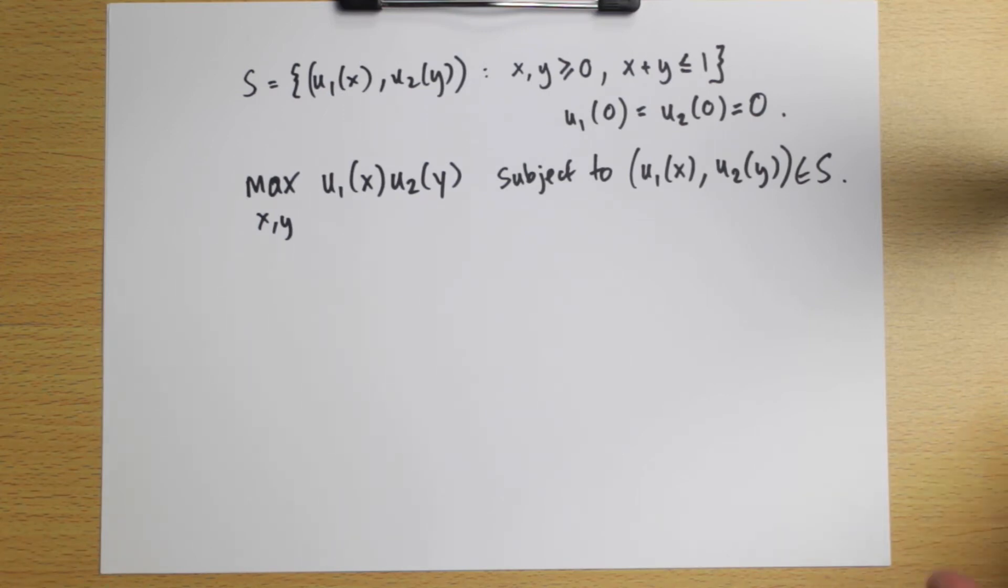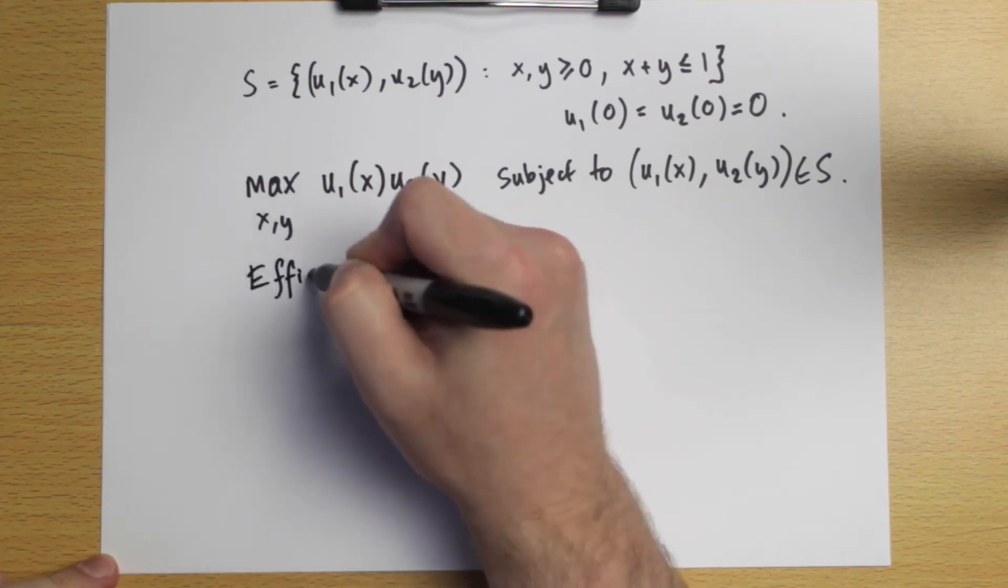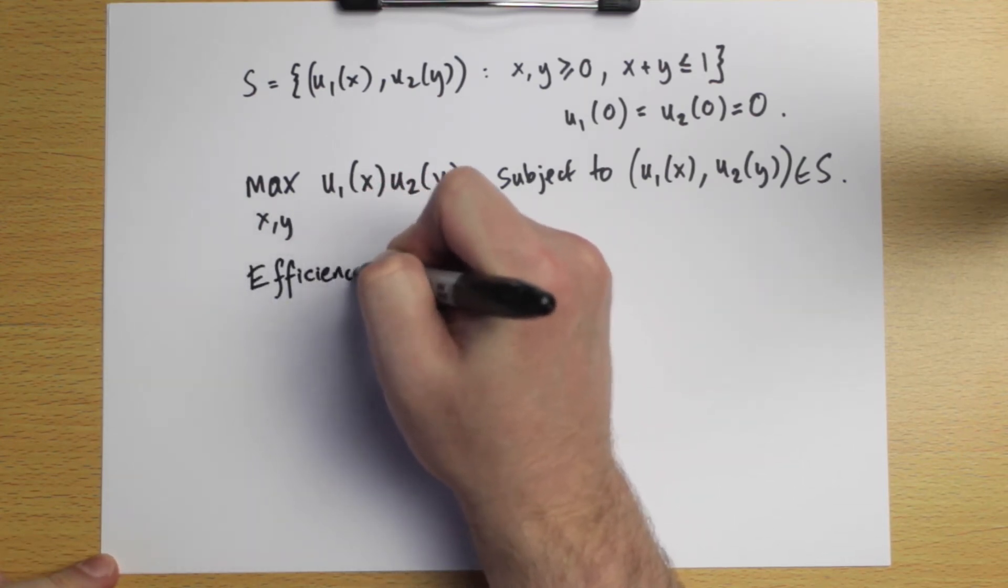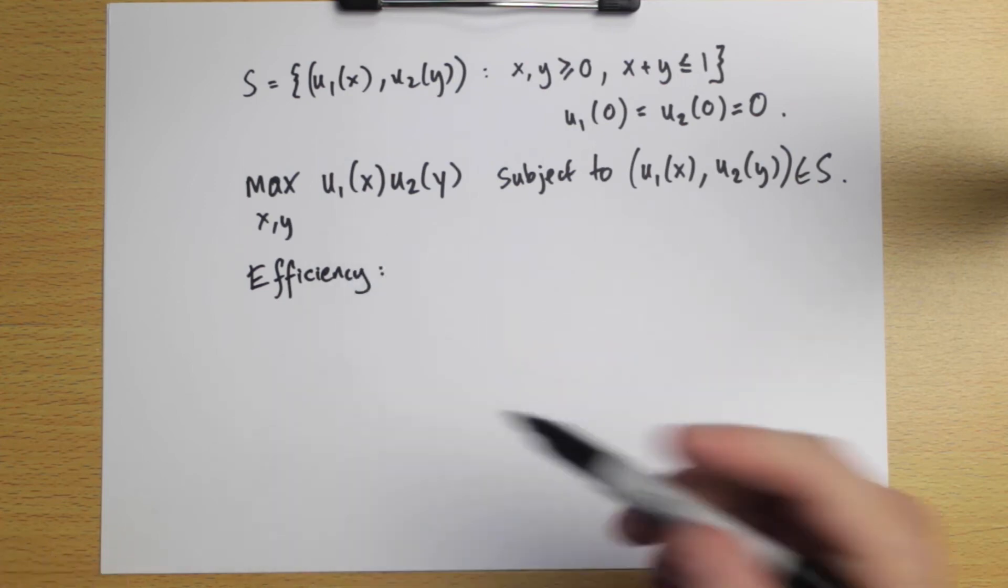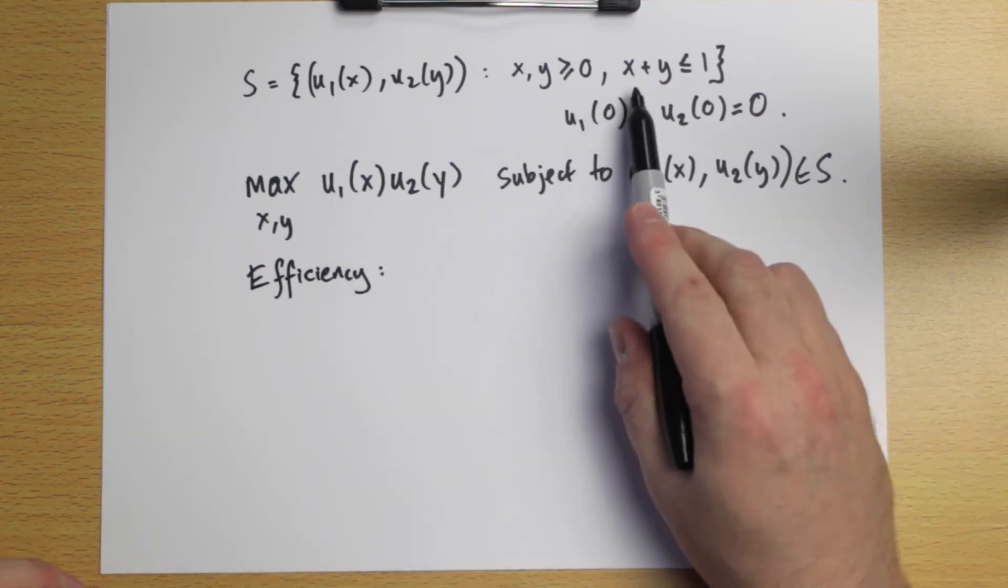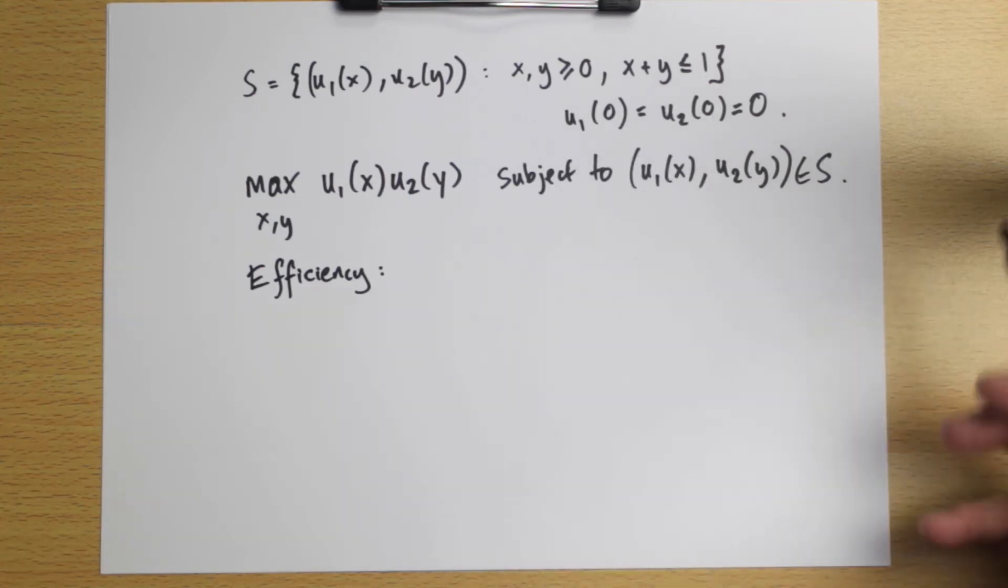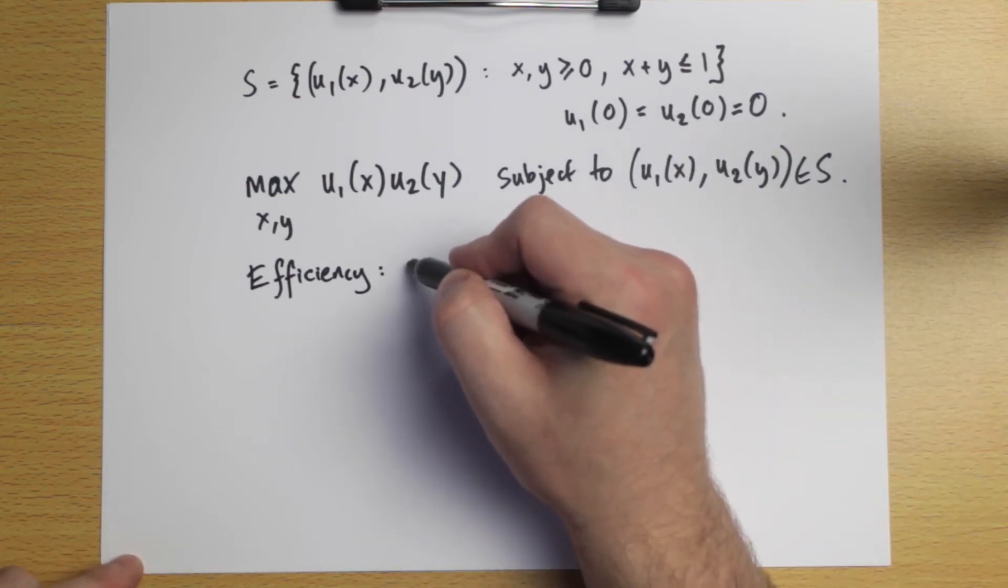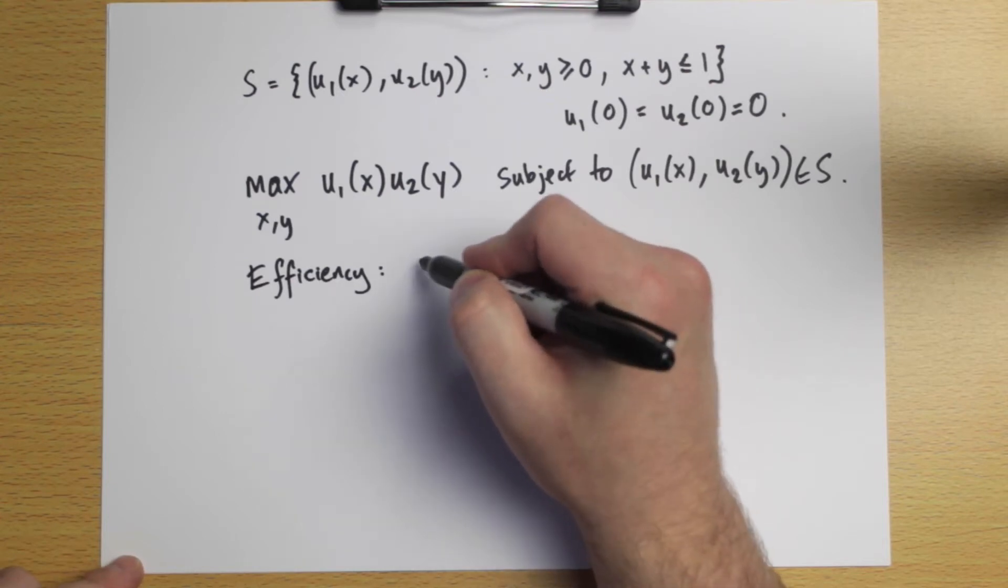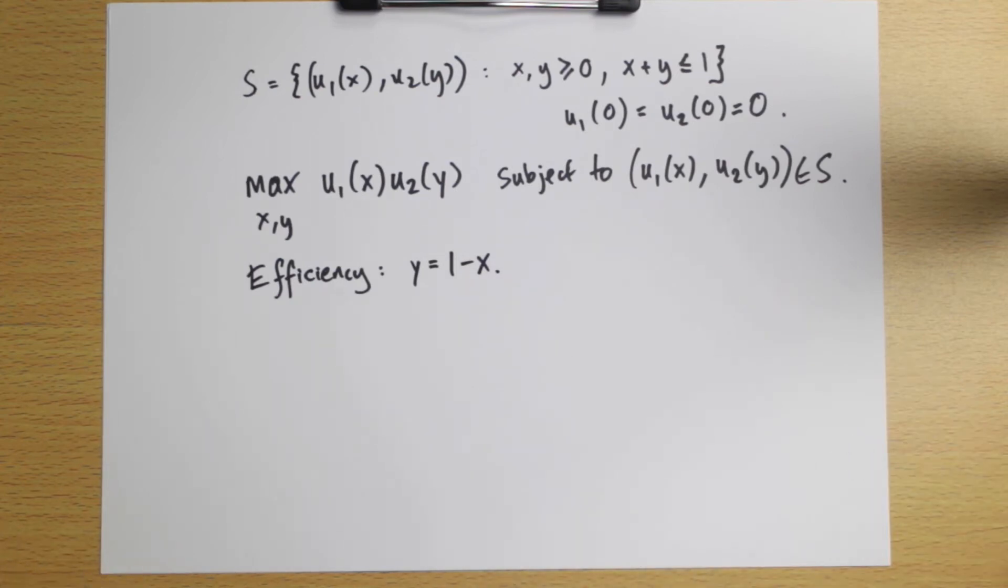As a first step to simplifying our approach to solving this problem, remember that the Nash bargaining solution satisfies the property of efficiency. It's going to choose a Pareto efficient alternative, so at the solution, we're not going to be throwing any money away. So X star, the best X, plus Y star, the best Y chosen by the Nash bargaining solution, are going to be equal to one. So let's just consider that Y is equal to one minus X, so that no money is being thrown away.